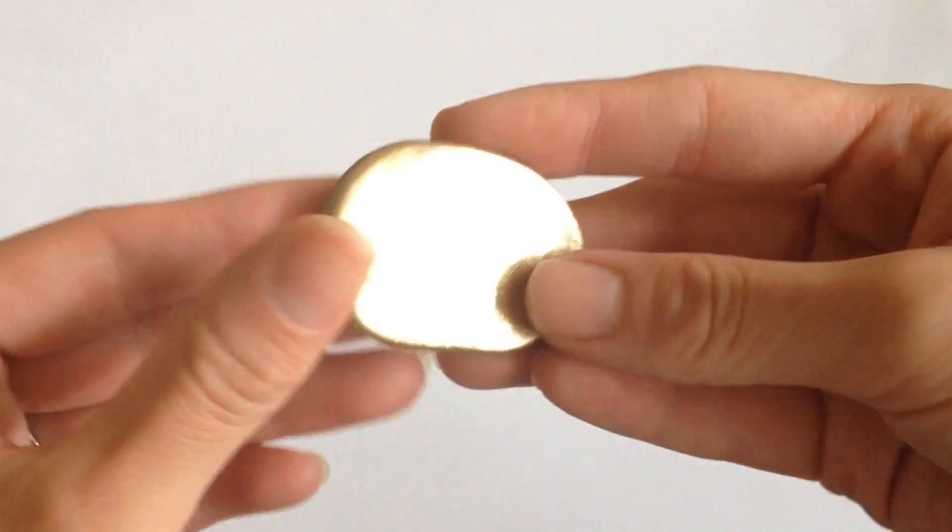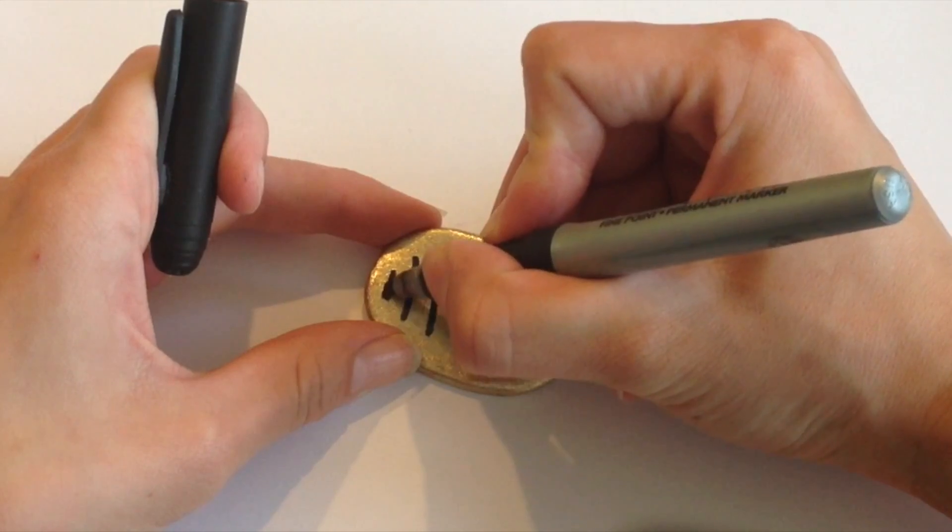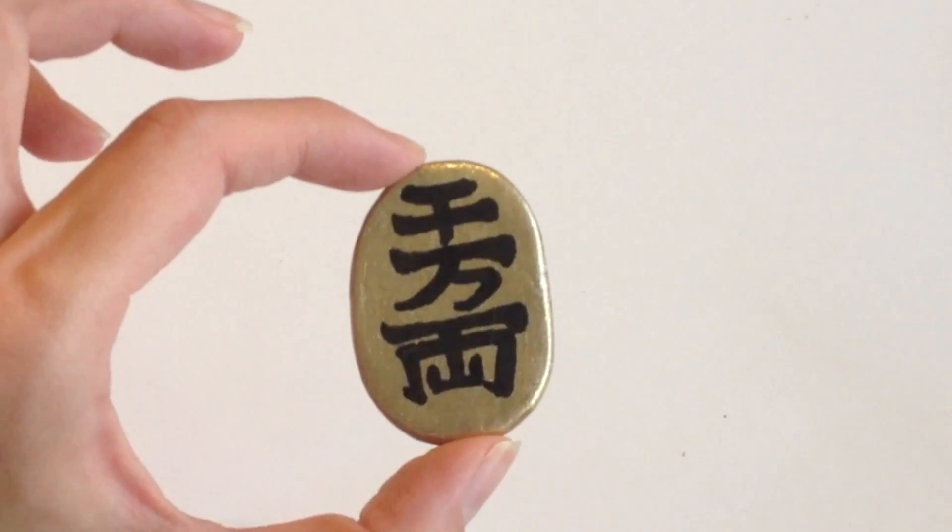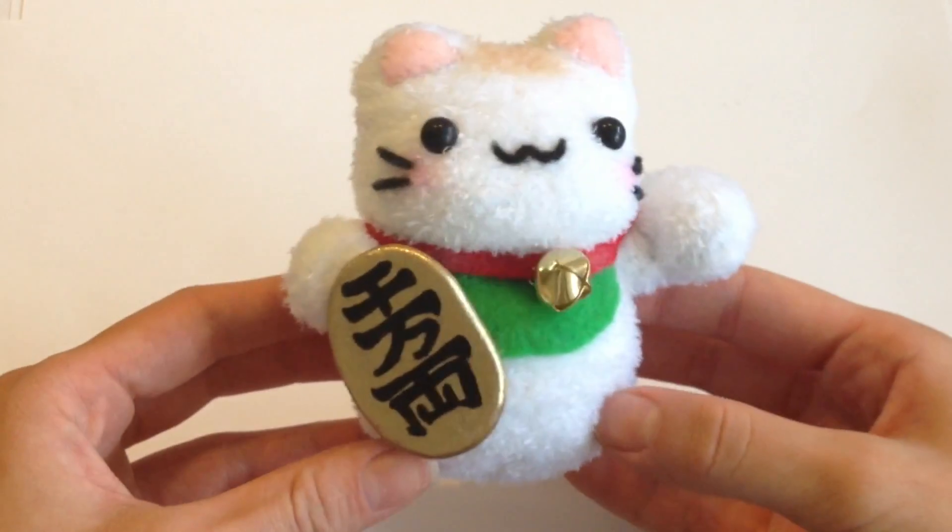Now different Maneki Neko's hold different coins. I just picked the most basic one that I found online and using a sharpie I just drew out the calligraphy that belongs on the center. So this is what my completed coin looks like and I just position it onto my cat and super glued it down.